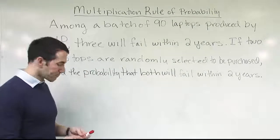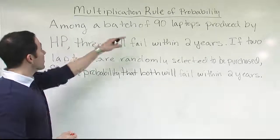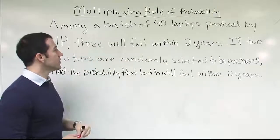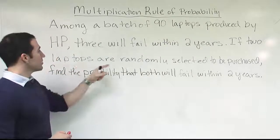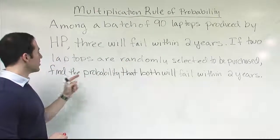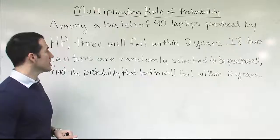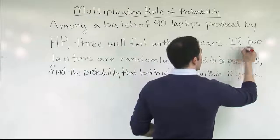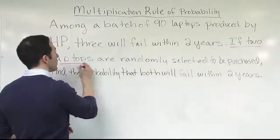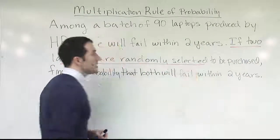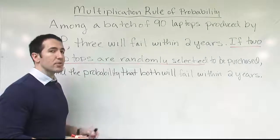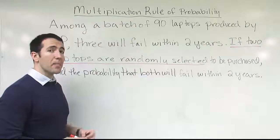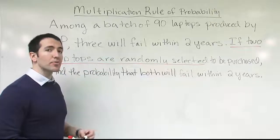Let's look at this example problem. Among a batch of 90 laptops produced by HP, three will fail within two years. If two laptops are randomly selected to be purchased, find the probability that both will fail within two years. How do I know this is the multiplication rule of probability? The phrase 'two laptops are randomly selected' — anytime I take more than one item, we're dealing with a multiplication rule. I'll have two fractions of basic probability multiplied together to get the overall probability.